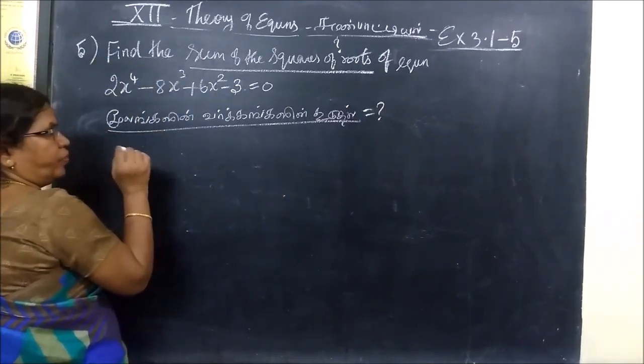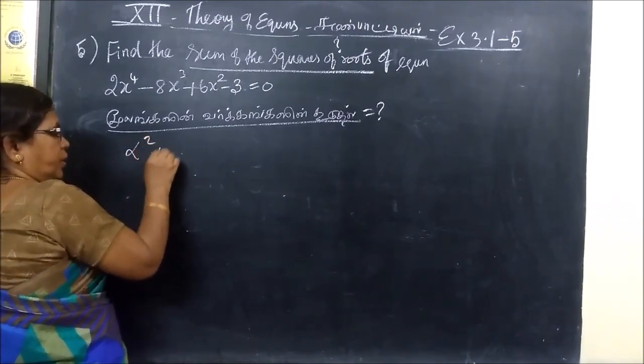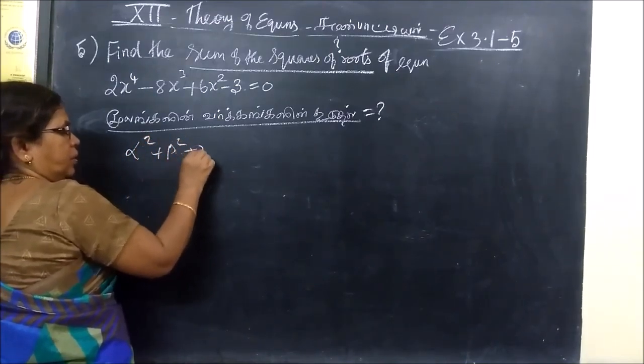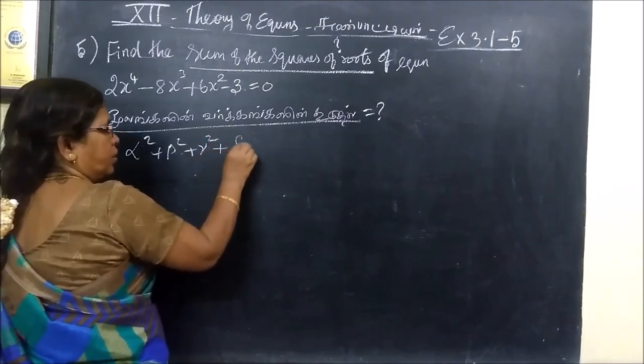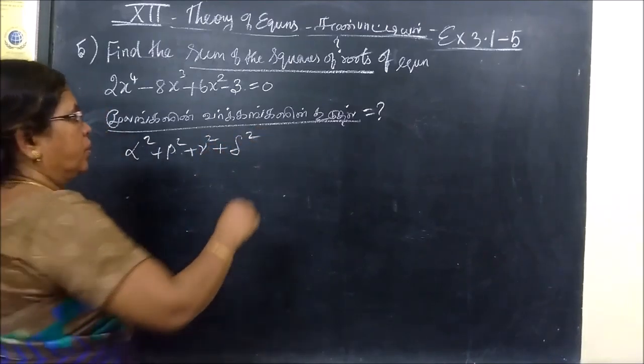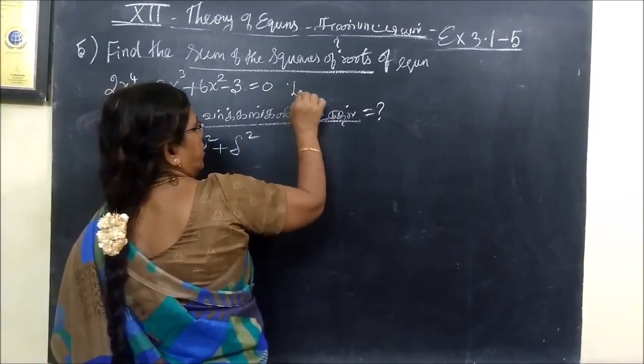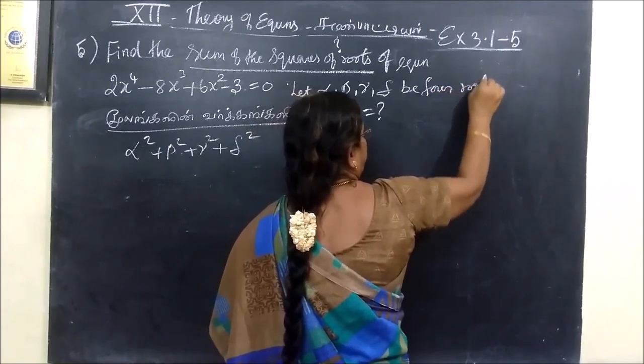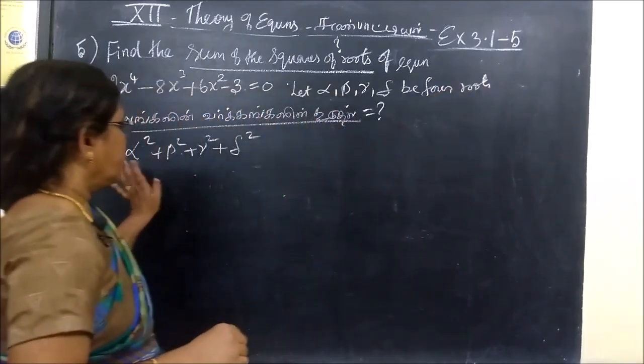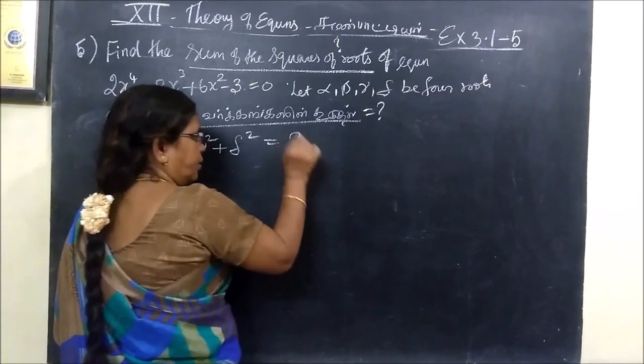So if alpha, beta, gamma, delta be four roots, then alpha square, beta square, gamma square, delta square. Let alpha, beta, gamma, delta be four roots. This is the question.